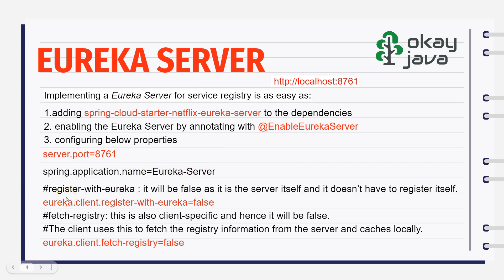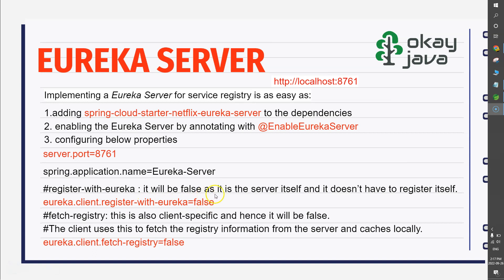Next, we have to add some properties into the properties file. The first one is the port number: server.port=8761, which is the default port on which Eureka Server runs. Then the application name, we're calling it eureka-server. The next property is eureka.client.register-with-eureka=false — because we are building a server, we do not want the server to register itself. The next property is eureka.client.fetch-registry=false — this property is client-specific; the client uses it to fetch the registry information from the server and cache it locally.